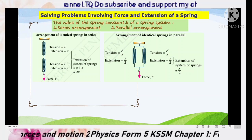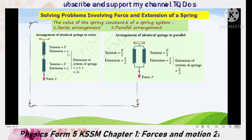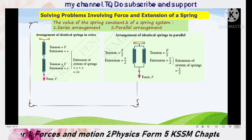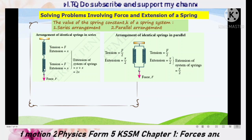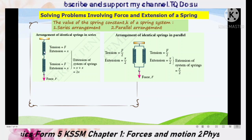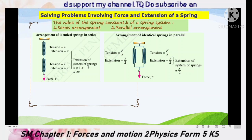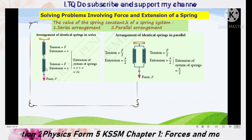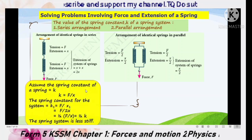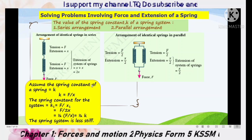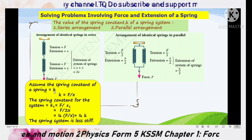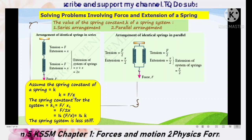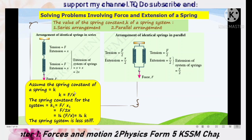Since we are using identical springs, both springs have the same value of spring constant, so F and X are directly proportional. When the tension on each spring equals F, each spring extends by X. Thus the total extension of the spring system is X plus X, which is 2X. For one single spring, from Hooke's Law we get K equals F divided by X.